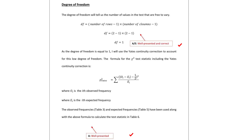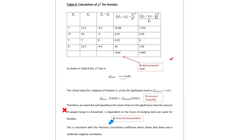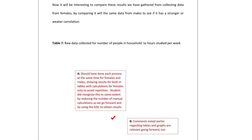There's a significant mistake here under criterion D — incorrect interpretation caused by an incorrect inequality. Be careful when interpreting chi-squared results. There is a typo that should have been caught before submission. This section also highlights repetition: the student should have done each process for females and males at the same time, showing results for both in tables with calculations for females only to avoid repetition. The student did recognise this to some extent by reducing manual calculations and using the GDC. The comments noted earlier regarding tables and graphs are relevant going forward, as there is a lot of duplication of errors, including another misspelling of 'Pearson's'.